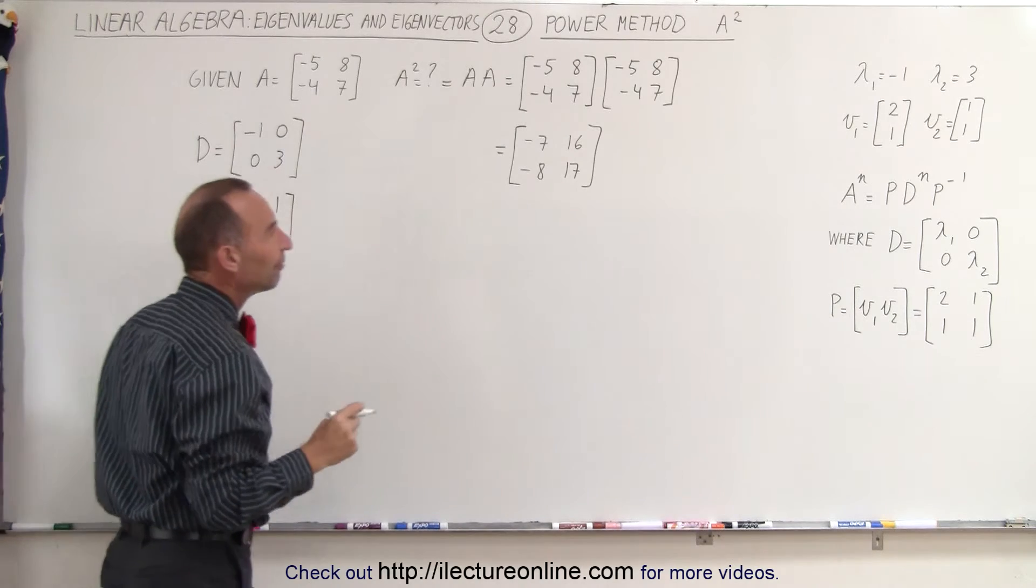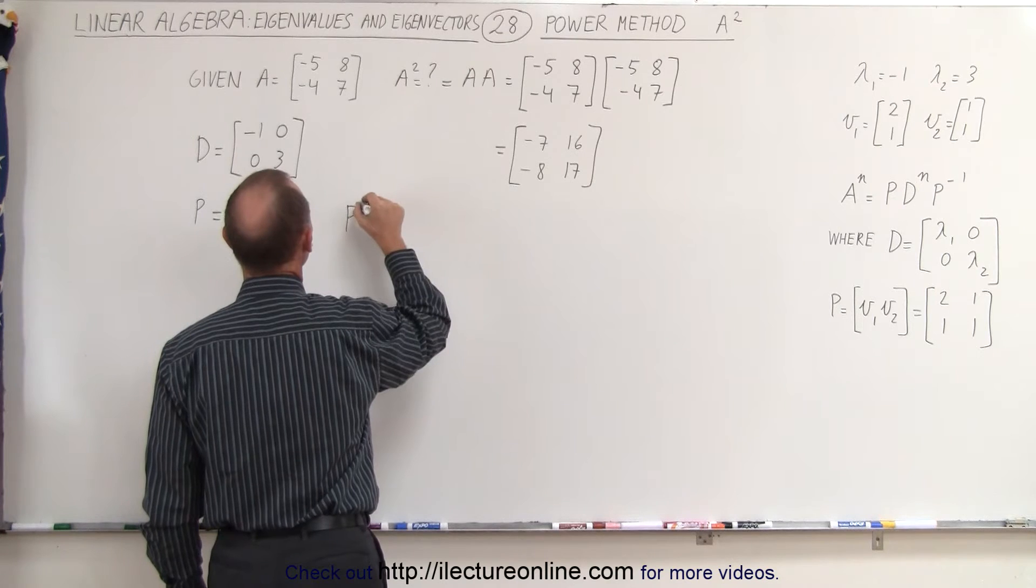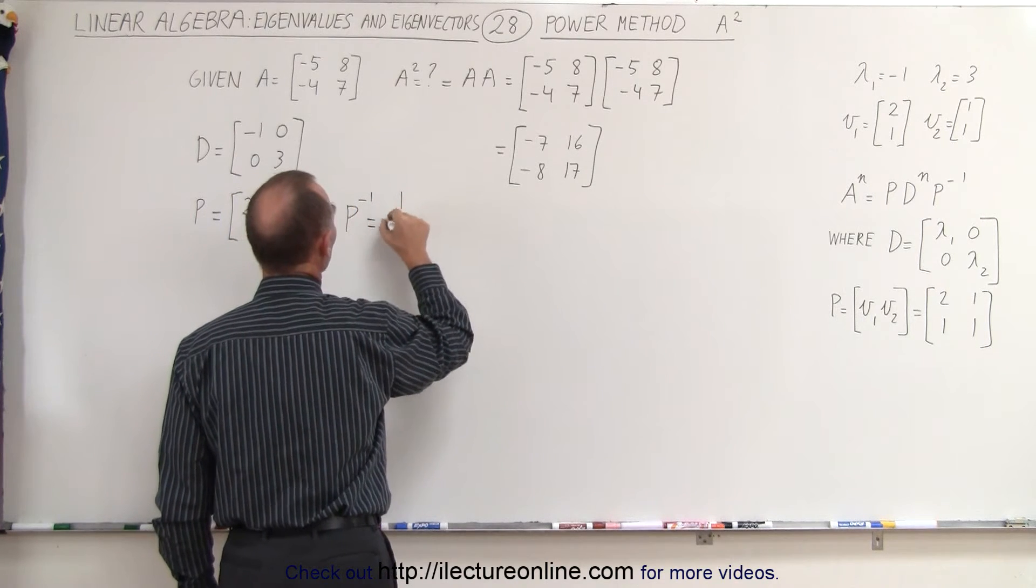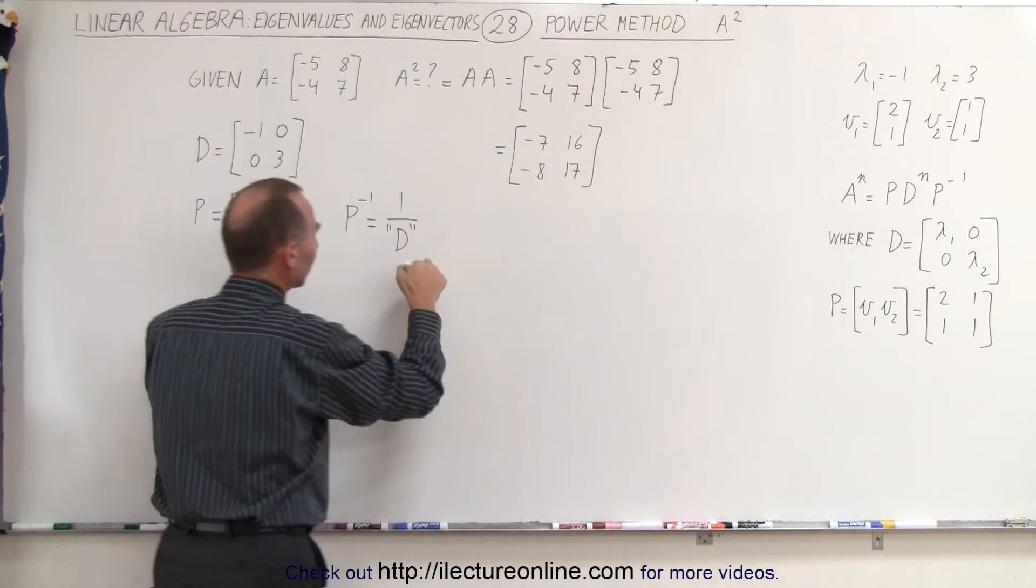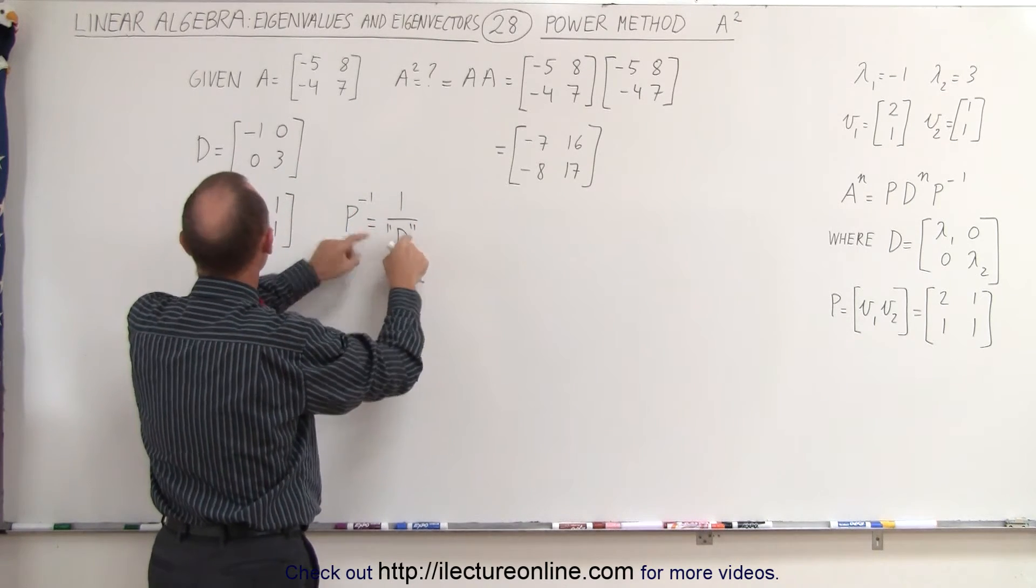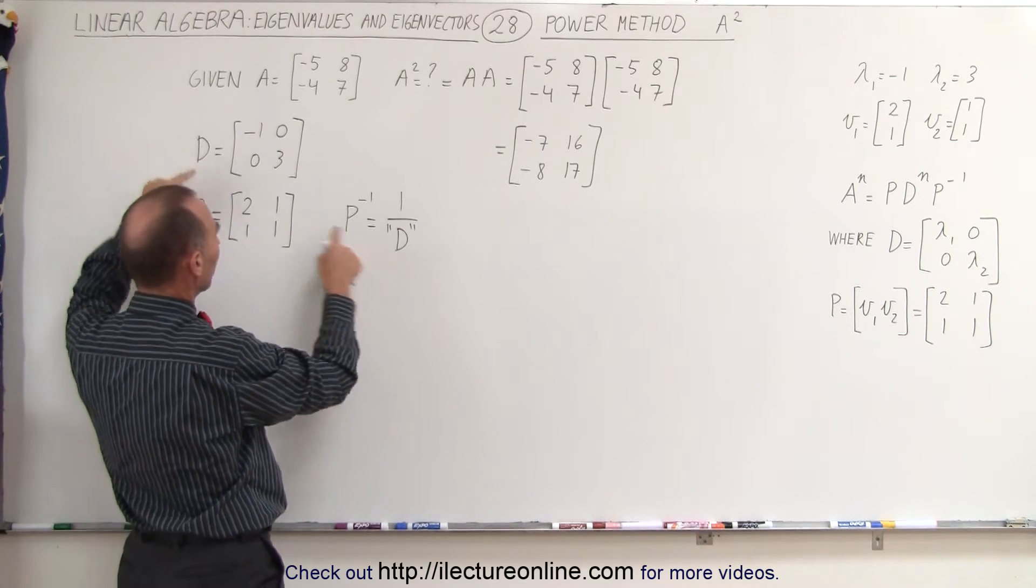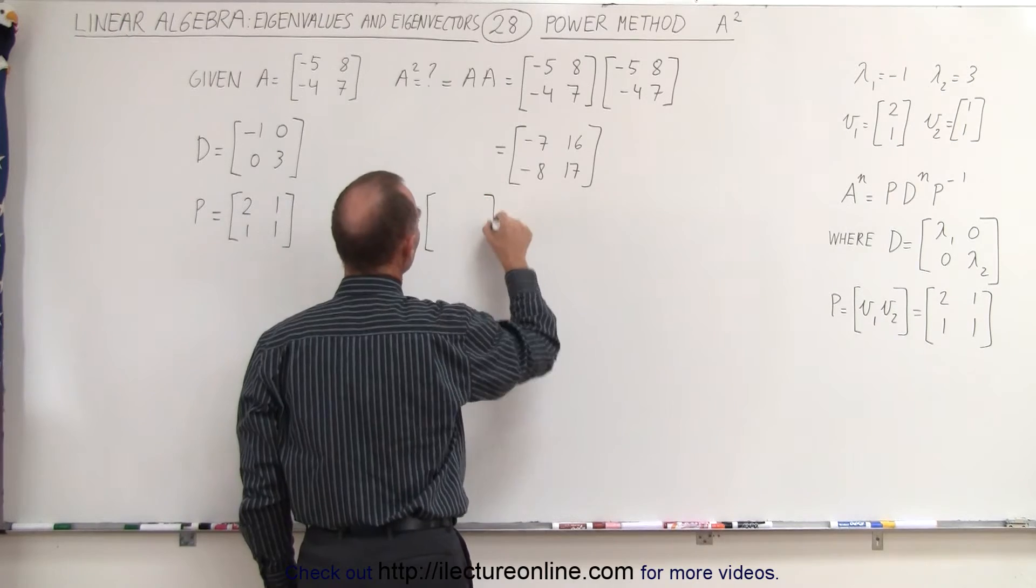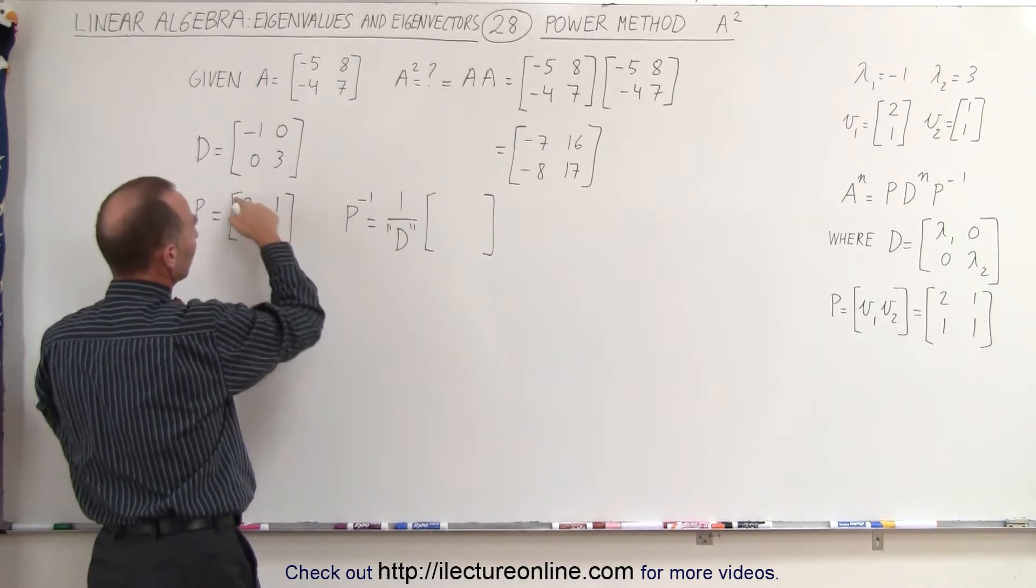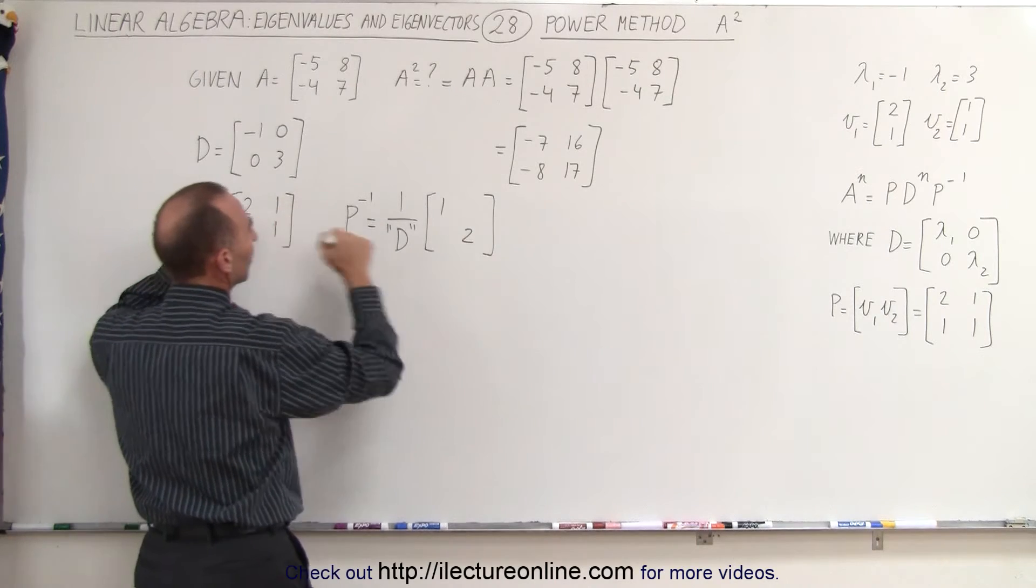And now we want to find the inverse of the P matrix. The inverse of a 2 by 2 matrix is equal to 1 over the determinant, and of course we'll put that in parentheses here, or little quotation marks, I should say, in order to not confuse it with this matrix right here. This means the determinant of matrix P, times the matrix where we exchange the diagonal elements, and we change the sign of these elements right here.